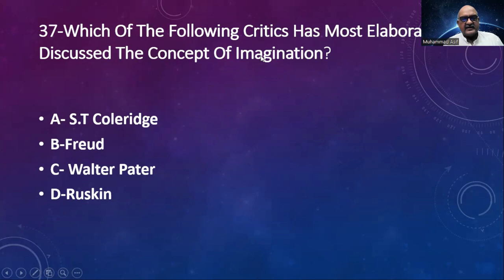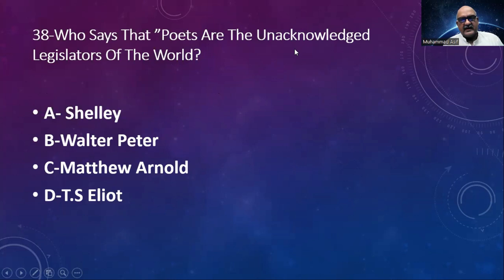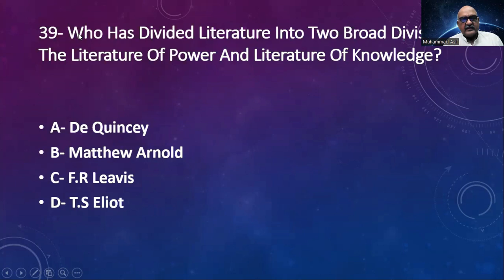Number 38: Who says that 'poets are the unacknowledged legislators of the world'? Options: Shelley, Walter Pater, Matthew Arnold, T.S. Eliot. The answer is Shelley. Number 39: Who has divided literature into two broad divisions — the literature of power and literature of knowledge? Options: De Quincey, Matthew Arnold, Fr. Davis, T.S. Eliot. The answer is De Quincey.